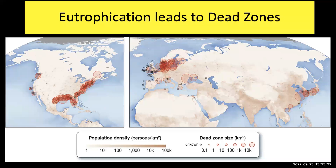Eutrophication of coastal waters can lead to dead zones. Dead zones are low-oxygen regions related to excess nutrients from agricultural runoff that stimulate algal blooms. When the algae in these blooms die, decomposition takes place. Decomposition is a chemical process that consumes vast amounts of oxygen, thereby depleting the water column of oxygen and creating anoxic or hypoxic dead zones that can kill marine life by suffocating them.